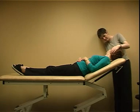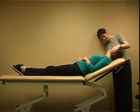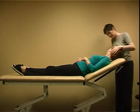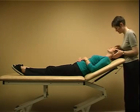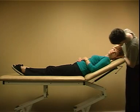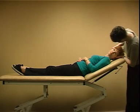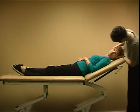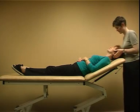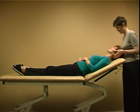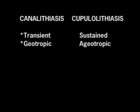Turn their head to the right and watch for nystagmus. Slowly roll the head back to the centre and then quickly to the left and back to the centre again. The direction of the fast phase and persistence of nystagmus will help determine the type of BPPV present and guide treatment.